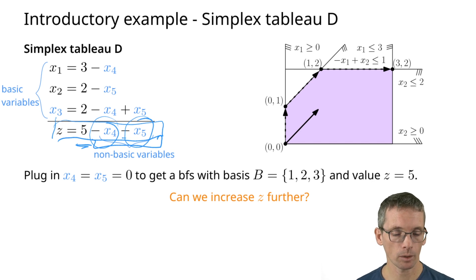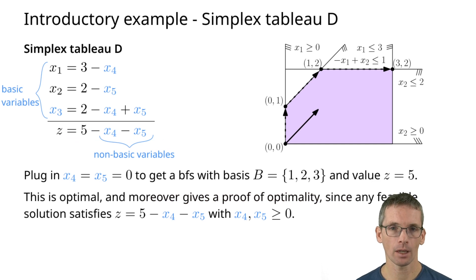We now know that the objective function in general is 5 minus something non-negative. So this is as large as possible if those two are 0. But this is what we exactly have. We have a solution where those two are 0. So z is already maximized. By seeing this objective function here we immediately see that we already have an optimal solution and the objective value is 5.